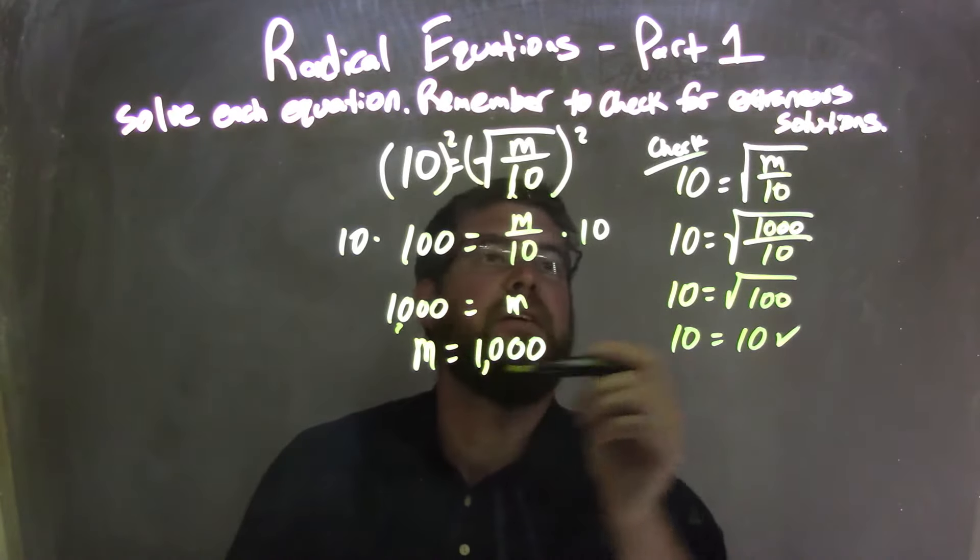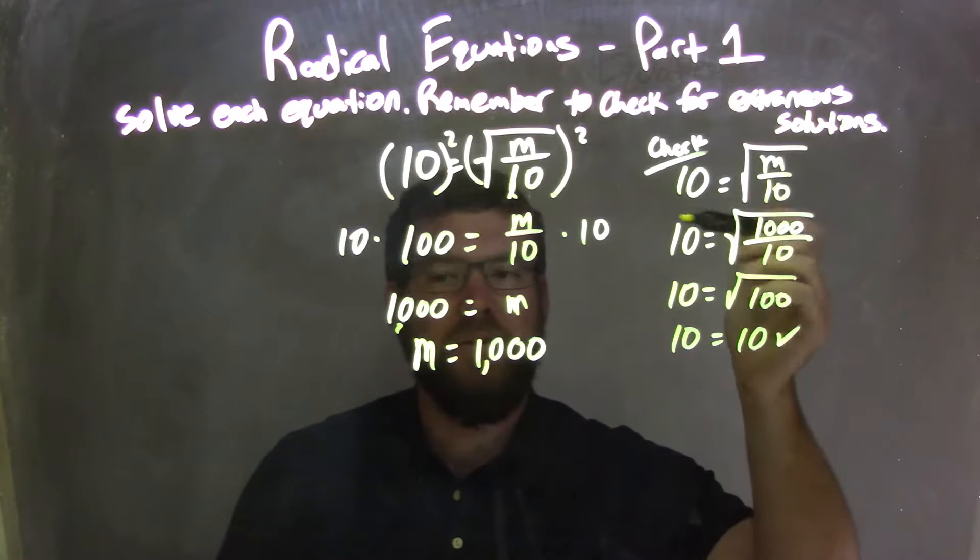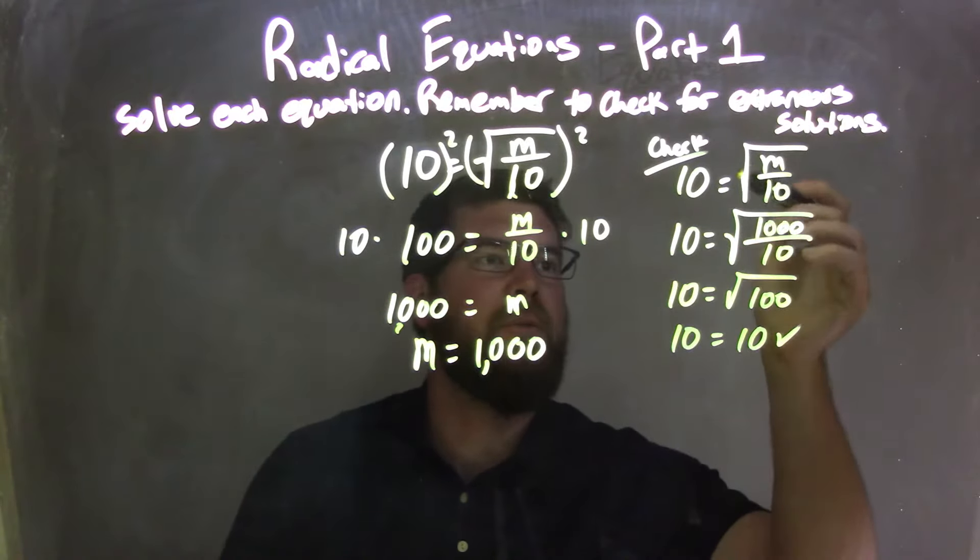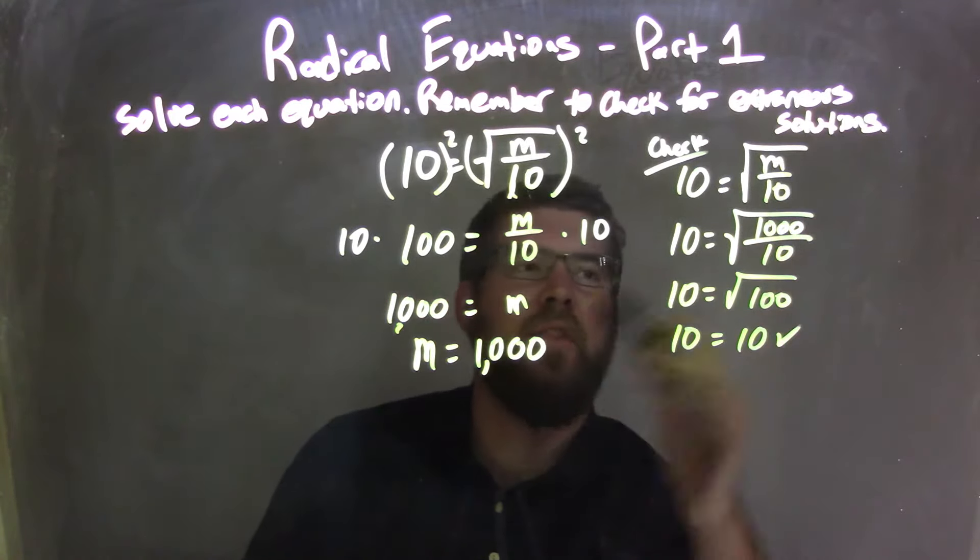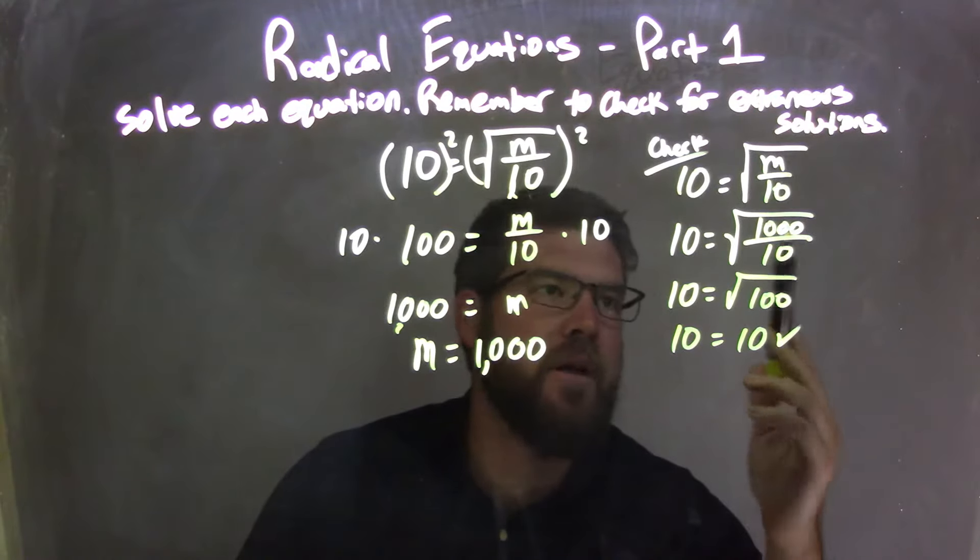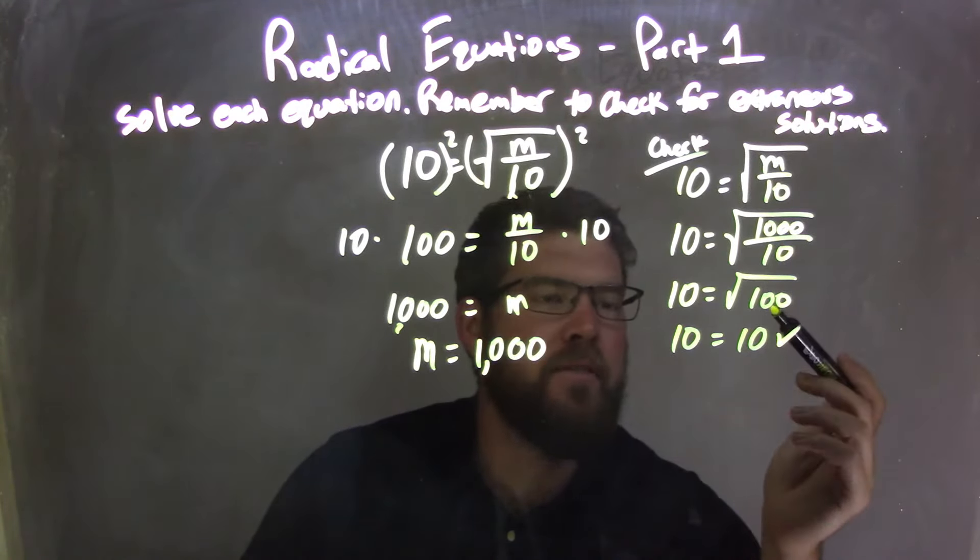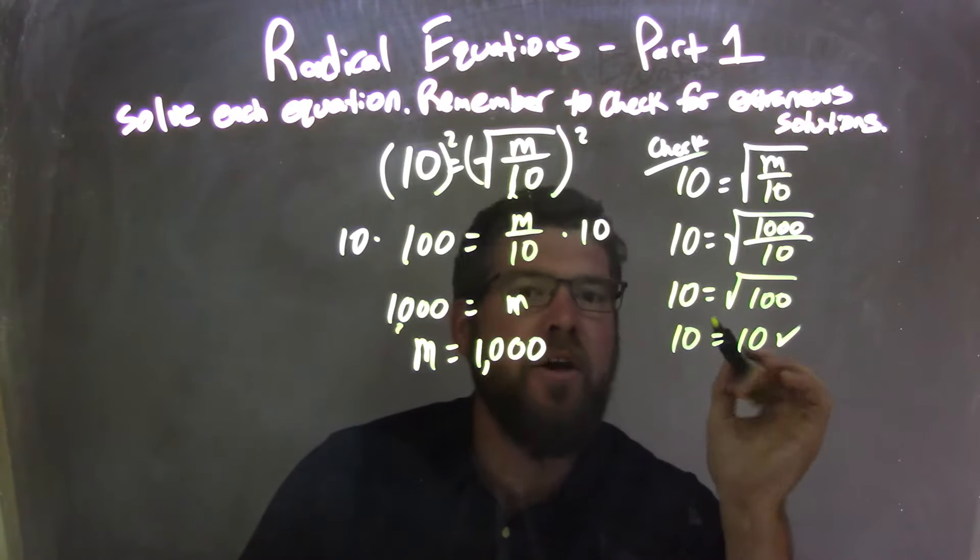Then I checked. 10 equals my original equation, 10 equals the square root of m over 10. I then plugged 1,000 in for m and started to simplify. 1,000 divided by 10 is 100. The square root of 100 is 10. And they're equal on both sides. So we don't have an extraneous solution. This is a true answer.